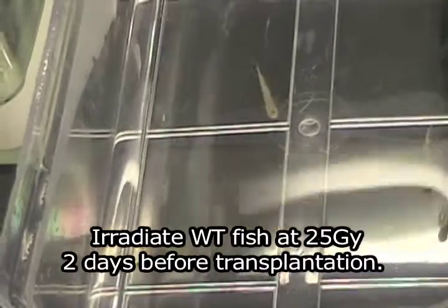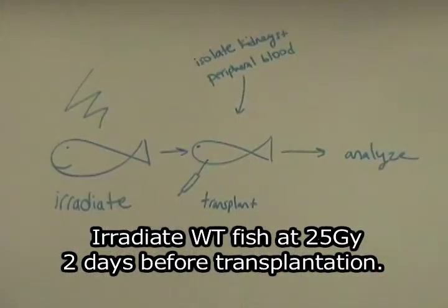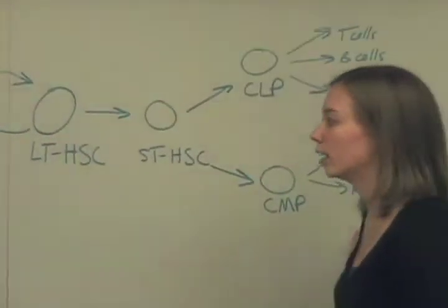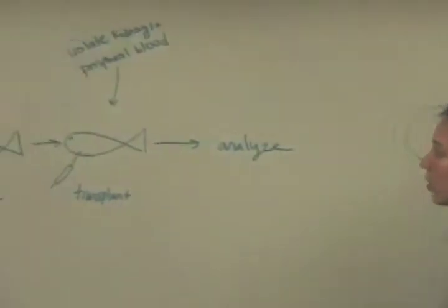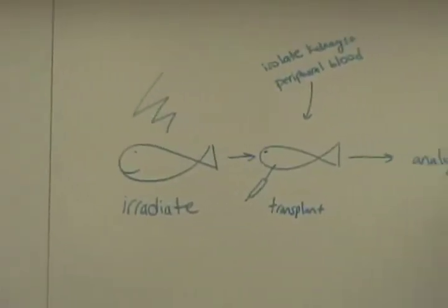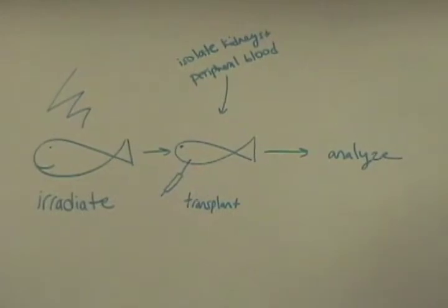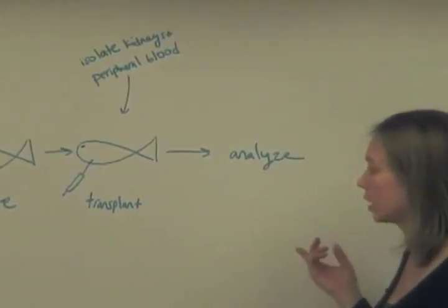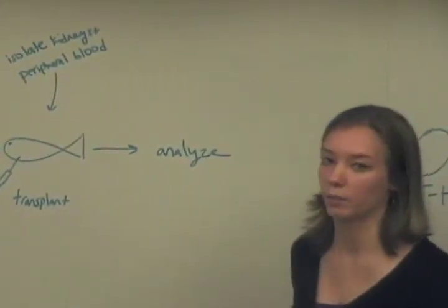Irradiate wild-type fish at 25 gray two days before transplantation. Then we have a clean system, and we can transplant in donor marrow from fluorescent transgenic donors. This way we can watch the cells that we transplant in and see if they can repopulate the blood.